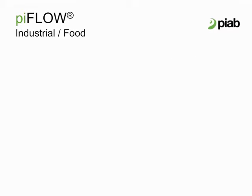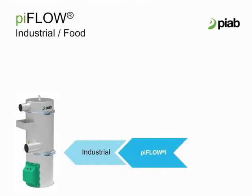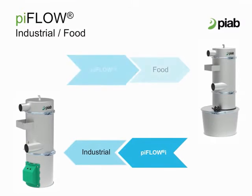There are two different types of units available. We have the PIFLOW I, designed for basic industrial applications — it includes general purpose gaskets and galvanized clamps. We then have the PIFLOW F, designed for low or basic food applications — it has food grade gaskets, stainless steel clamps, and is FDA approved. Both the PIFLOW I and F have flexible filter options and can achieve a max flow rate of about 5 tons per hour under ideal circumstances.